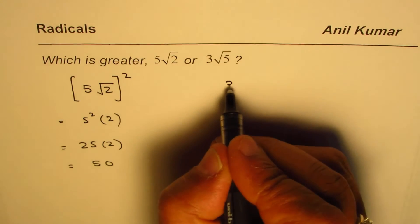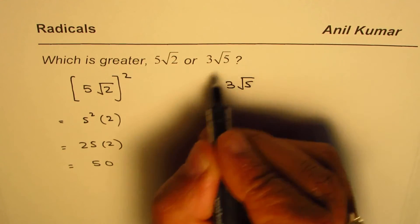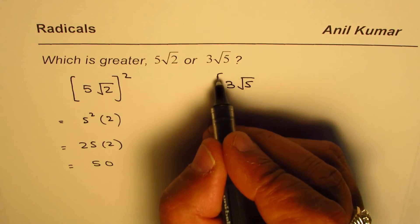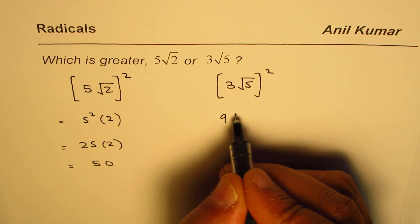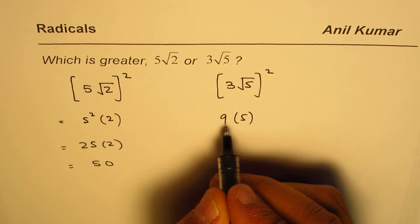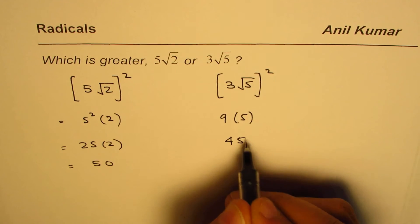On the other side we have 3 square root 5. We know both are positive. So if we square this we get 9 times 5, and 9 times 5 is 45.